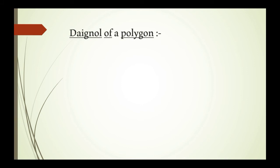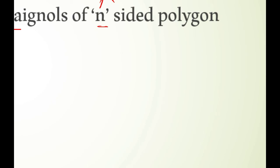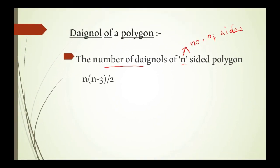Diagonals of a polygon. Diagonals are line segments that join non-consecutive vertices — meaning vertices that are not adjacent. For finding the number of diagonals in a polygon, the formula is: n into n minus 3, divided by 2, where n is the number of sides.